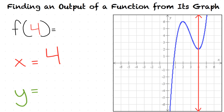We draw our graph that represents x equals 4 and look to see at which point the two graphs intersect. Once we find that point, we look to see what is the y coordinate of that point. In this case, our y coordinate is 2. This means that our final answer is f of 4 equals 2.